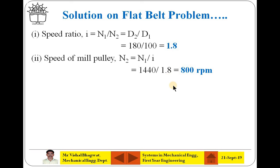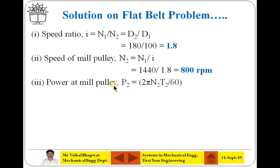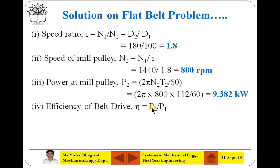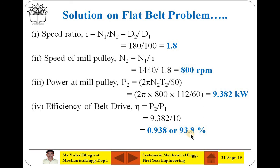The power at the mill pulley is P2 = 2πNT/60 = 2π × 800 × 112 / 60, giving 9.382 kW. Efficiency is output (mill power) divided by input (motor power): 9.382 divided by 10 equals approximately 93.8%. This is the efficiency of the flat belt drive.